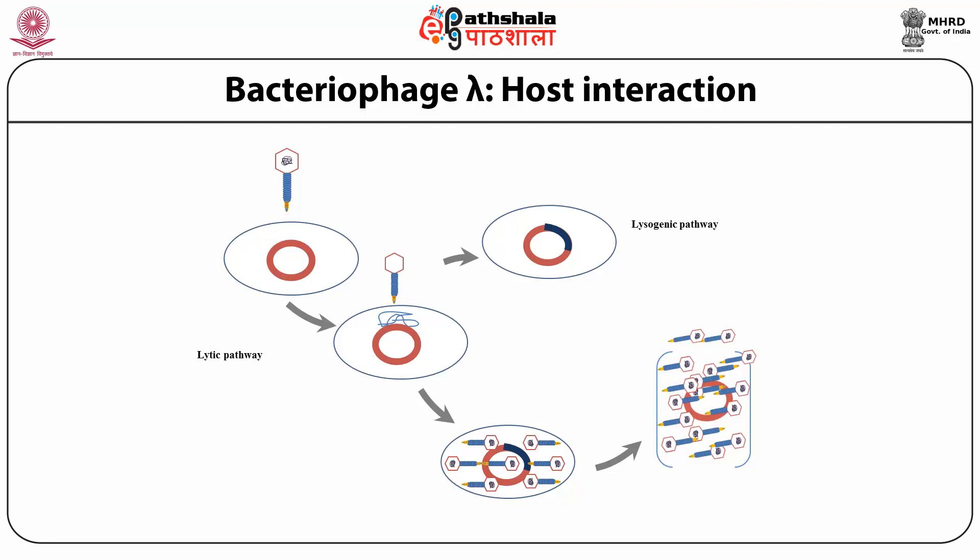After circularization, the phage adopts one of two life cycles. First, in the lysogenic cycle, it gets integrated into the bacterial genome and replicates and is transferred along with the bacterial genome. In the lytic cycle, it replicates using host cell machinery and continues until the death of the bacterium due to overproduction of its virions.